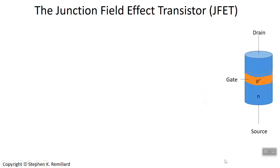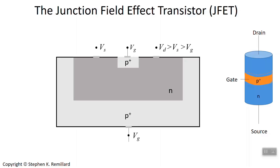The Junction Field Effect Transistor, or JFET, is another design for a transistor, just like the MOSFET. Shown to the right is a 3D depiction of a JFET where the gate is a wrap-around layer of a heavily doped semiconductor, and the body is the other variety of semiconductor, not heavily doped. In the thin-film realization, you have a P-body that is heavily doped, then a regularly doped N-region, and then another heavily doped P-region on top.